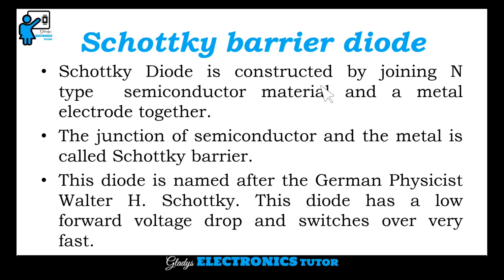Schottky Diode is constructed by joining N-type semiconductor material and a metal electrode together. The junction of the semiconductor and the metal is called the Schottky Barrier.